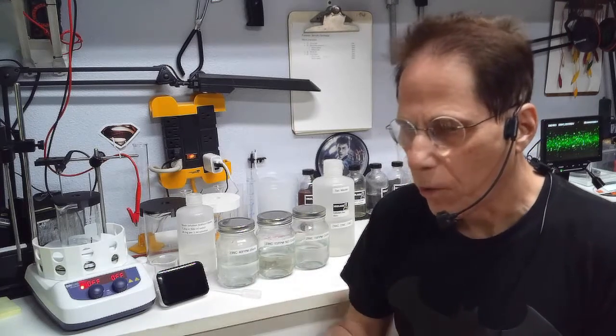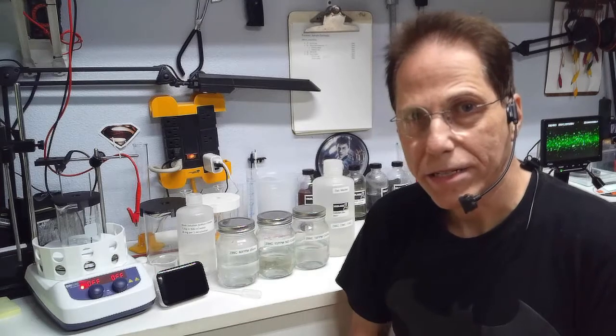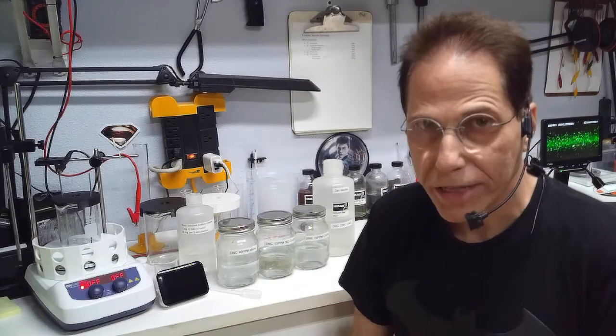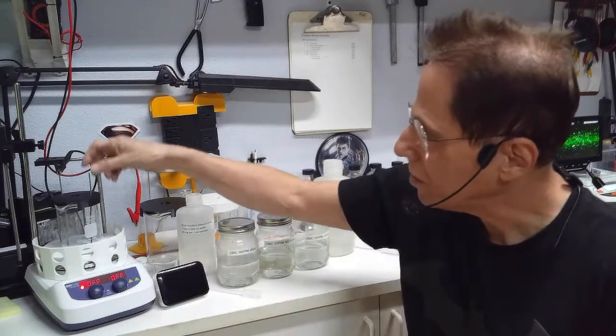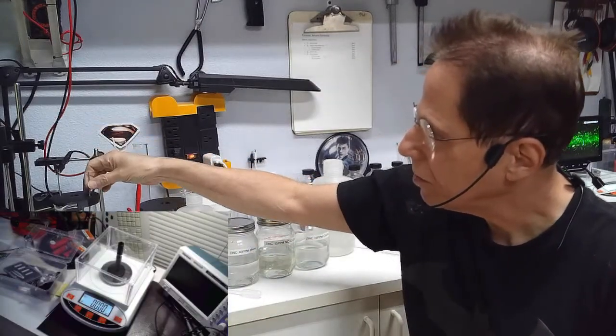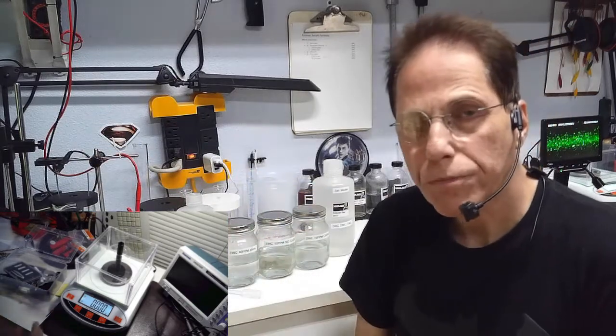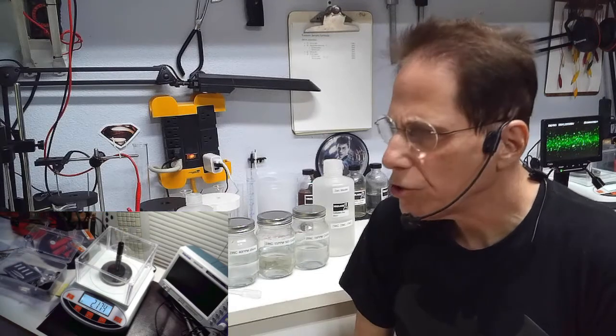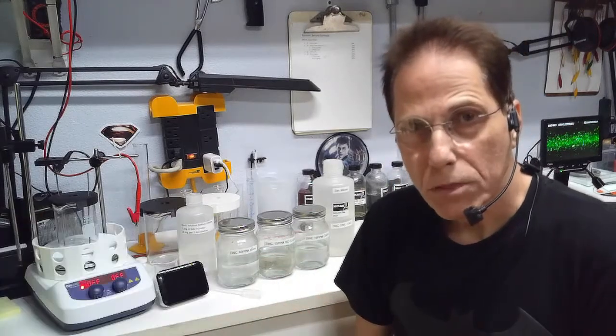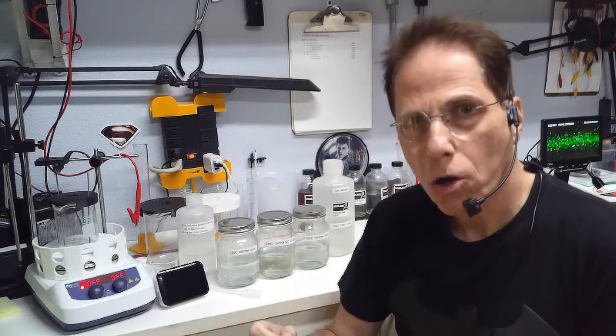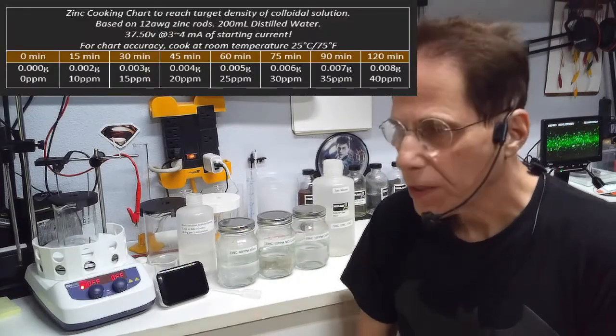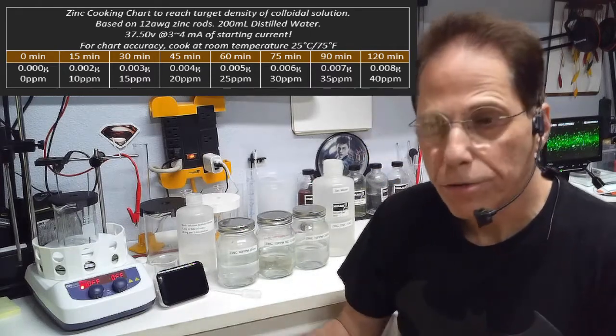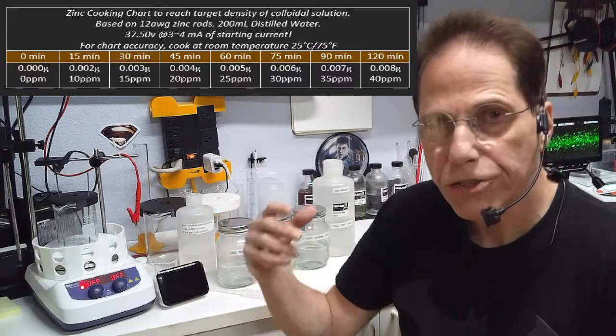Many of you guys do not have the equipment that I have in order to create colloidals. So I want to do this in a way that you can create zinc without having to do the tremendous expense. The easiest way to create the zinc is naturally by weighing the rods, seeing how much material has gone off it. But if you don't have that, I've made a chart which deals with how long to cook the zinc for.